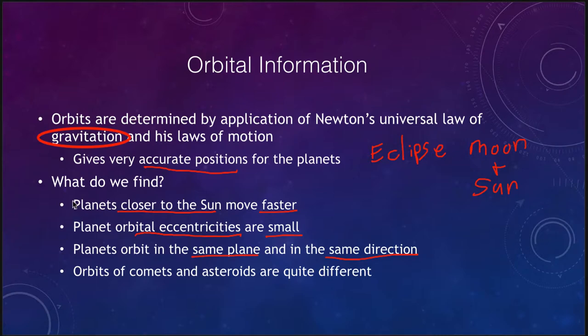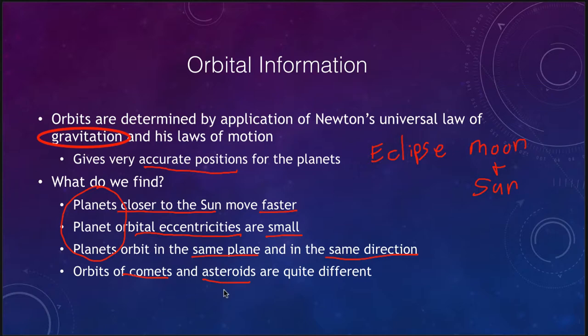These three properties — nearly circular orbits, same plane, same direction — apply specifically to the planets. Comets and asteroids are quite different. Comets can have very eccentric, highly elliptical orbits; their closest approach could be inside Earth's orbit and their furthest could be out beyond Neptune. Comets and asteroids do not necessarily orbit in the same plane or even in the same direction as the planets.